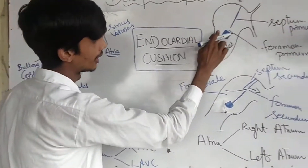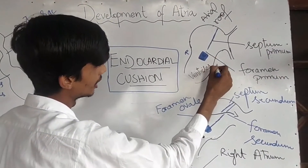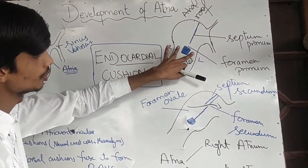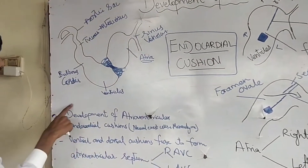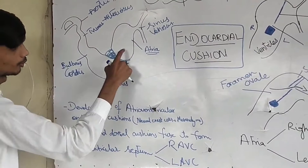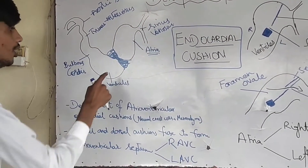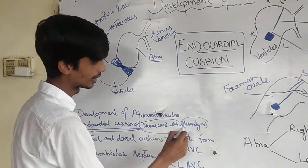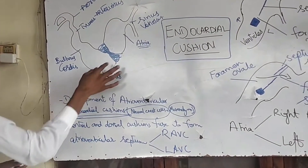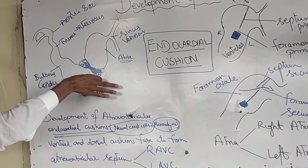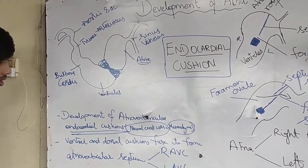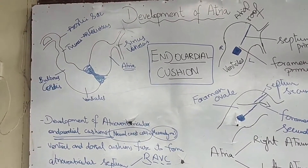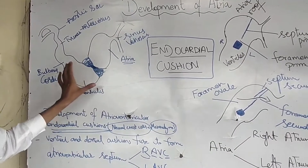After this dorsal and ventral fusion, the atria and ventricles are divided into right and left halves. The fused atrioventricular cushions create two spaces — the right and the left. The space between the atria and ventricles is partially closed by the endocardial cushions, which arise from neural crest cells and mesenchyme, dividing it into the right atrioventricular canal and the left atrioventricular canal.